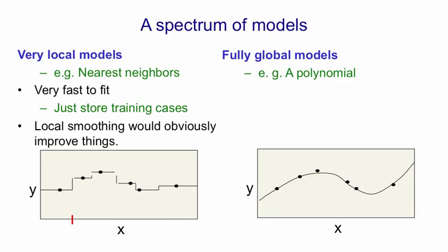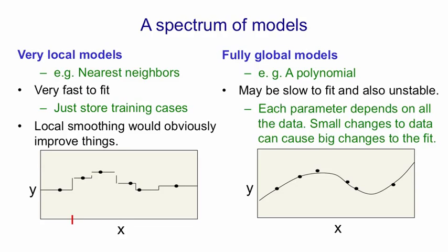At the other extreme, we have fully global models, like fitting one polynomial to all the data. They're much harder to fit to data, and they may also be unstable. That is, small changes in the data may cause big changes in the model you fit. That's because each parameter depends on all the data.